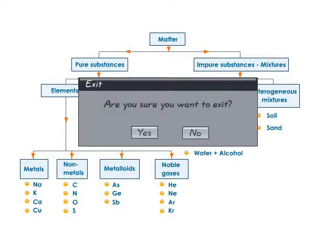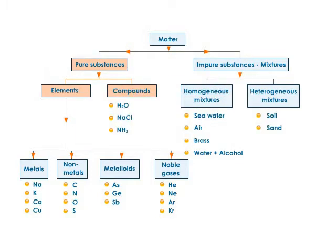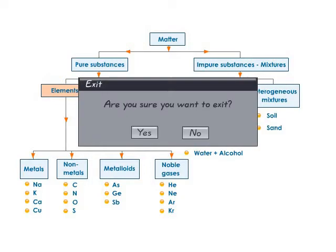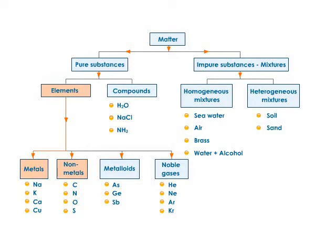You can again classify pure substances into elements and compounds. Elements contain only one substance and can be grouped as metals, non-metals, metalloids, and noble gases.